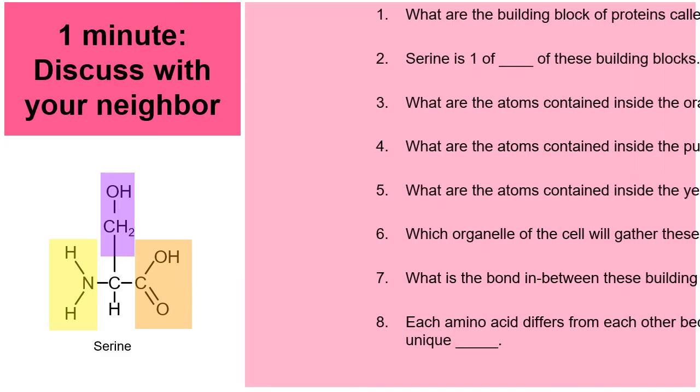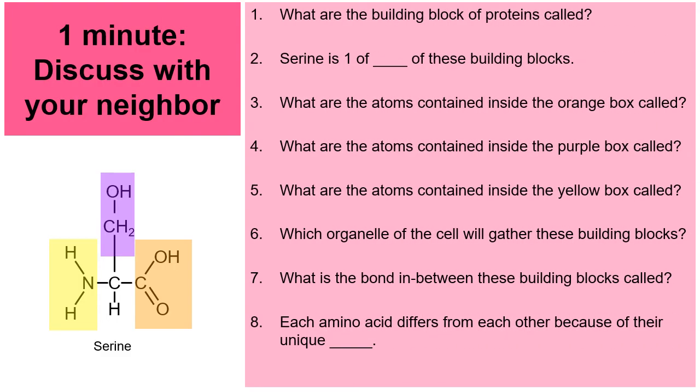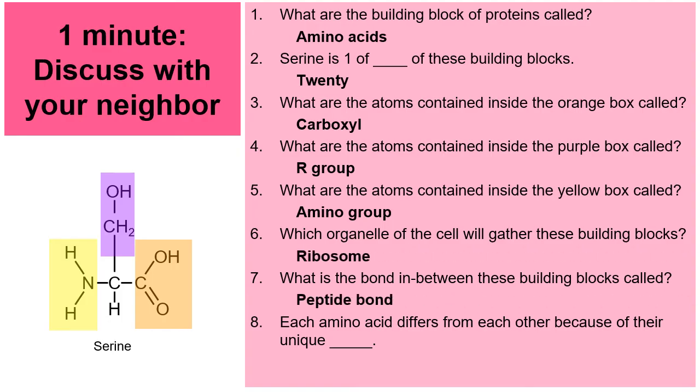So here's a little review challenge for you. Pause the video. I'm going to go over the answers now. For number one, I hope you said amino acids. Number two, 20. Number three, carboxyl. Number four, R group or side group. Number five, amino group. Number six, ribosome. Number seven, peptide bond. Number eight, R group or side group. Let's continue on.